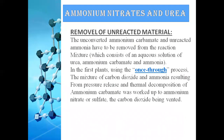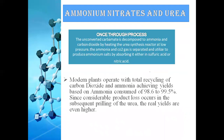The unconverted ammonium carbamate and unreacted ammonia must be removed from the reaction mixture. In the once-through process, unconverted carbamate is decomposed back to ammonia and carbon dioxide by heating at low pressure; these are then used to produce ammonium salts. Modern plants use total recycling of carbon dioxide and ammonia, achieving yields of 98 to 99.5% based on ammonia consumed.